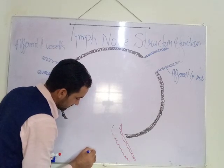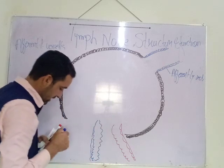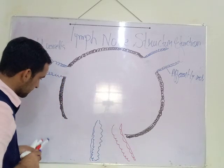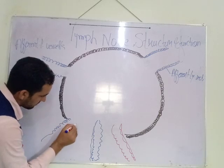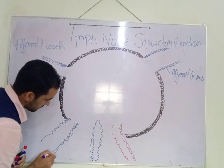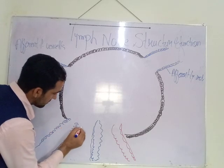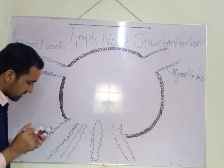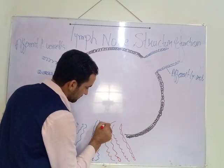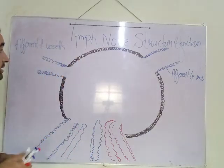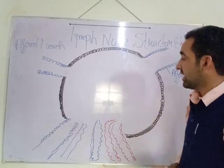Veins are also present on the concave surface. Efferent lymphatic vessels are also present on the concave surface of the lymph node — there may be one or two efferent vessels. An artery, also one or two, supplies arterial blood into the lymph node. The outer surface of the lymph node is called the cortex, and the inner surface is called the medulla.